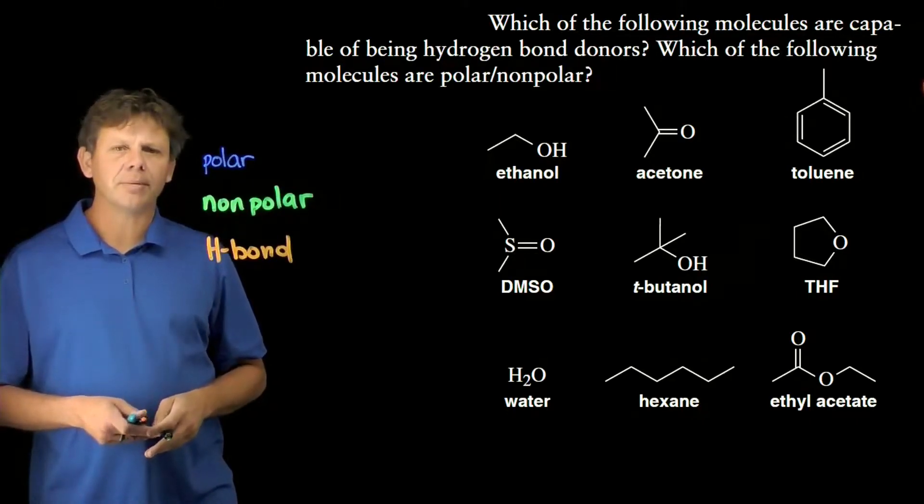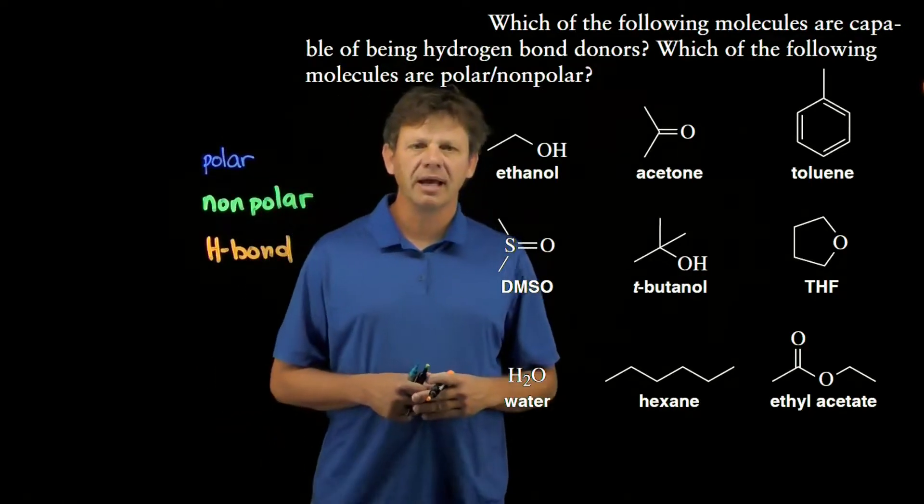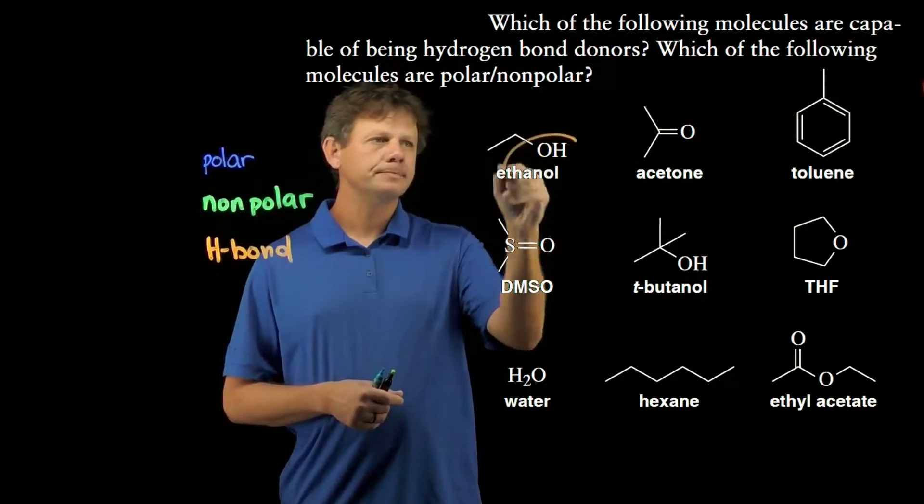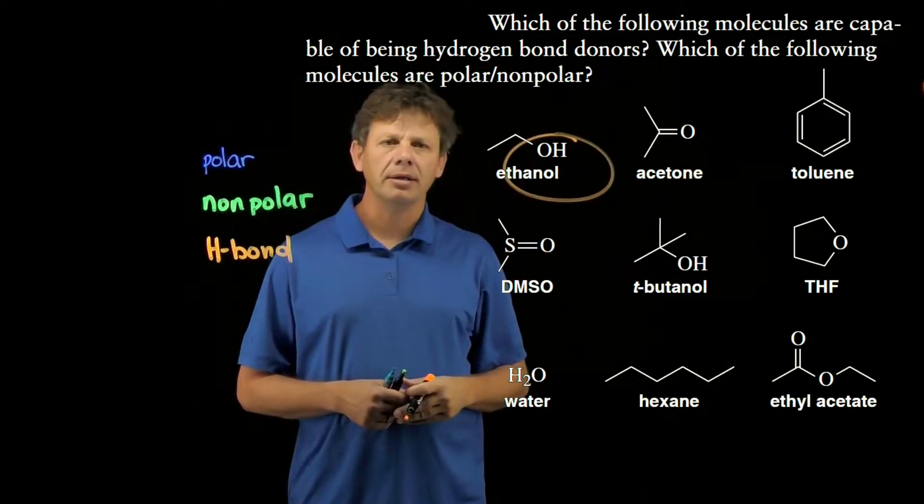Let's start with the hydrogen bond donors. For that, we're going to look for molecules that have a hydrogen attached to an electronegative atom. For example, ethanol would be an example of a hydrogen bond donor.